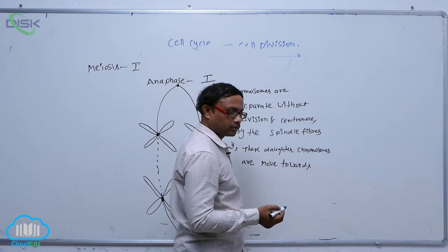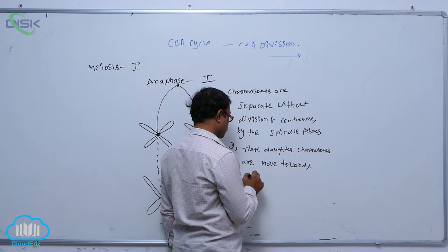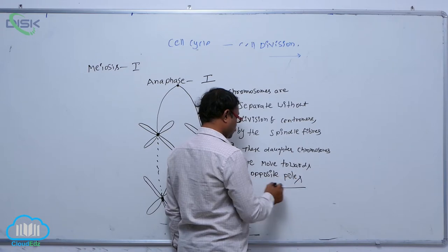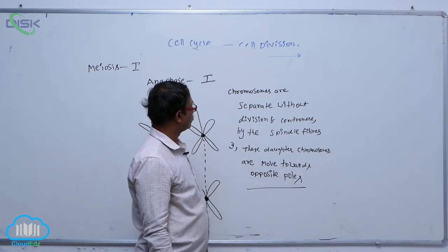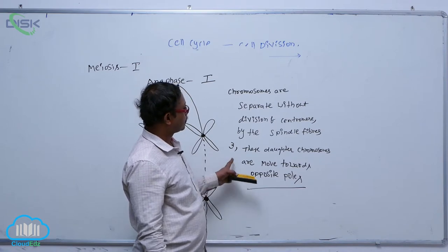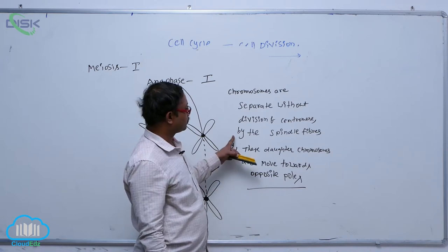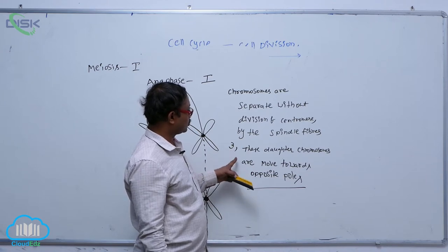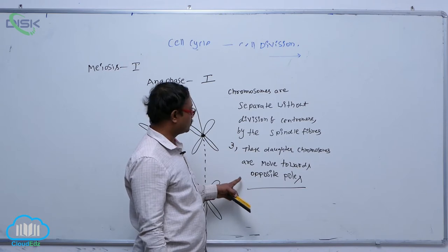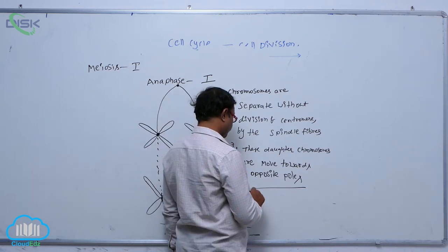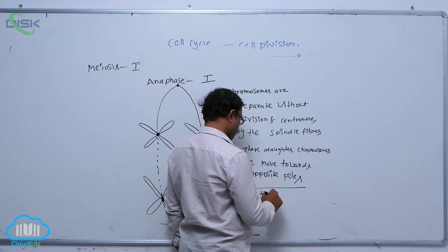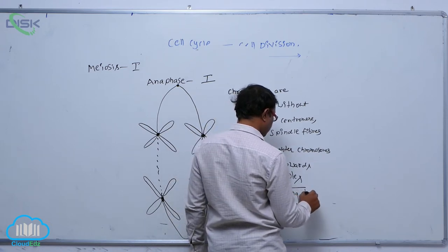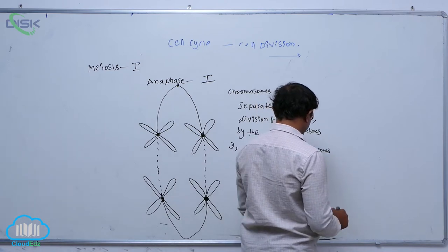In this, daughter chromosomes are moved towards opposite poles. Chromosomes separate without division of the centromere, by the spindle fibers. After that, these daughter chromosomes are moved towards opposite poles. By the resulting process, chromosome number is reduced to half.